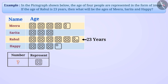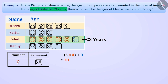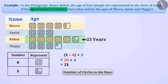It is given that Rahul's age is 23 years. To find the value of the image, we relate this number to the number of images shown. There are 5 complete images, each with 4 circles, giving 5 multiplied by 4 equals 20 circles. Adding the 3 circles of the last partial image, we get 20 plus 3 equals 23, which is Rahul's age. Therefore, each complete image represents the number 4, so the value of one image is 4.